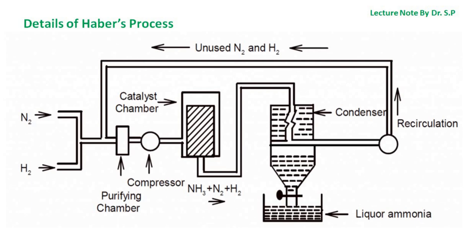These gases are then passed into a purifying chamber, because the reaction mixture should be free from impurities. They are then passed into a compressor where they are subjected to 200 atmospheres, and then enter the catalyst chamber, which is initially heated to about 450 degrees Celsius and contains iron as the catalyst.